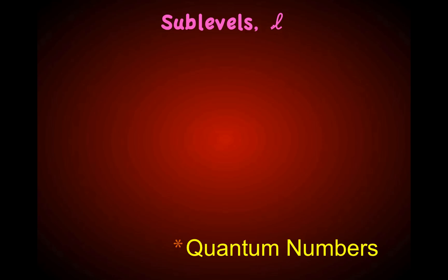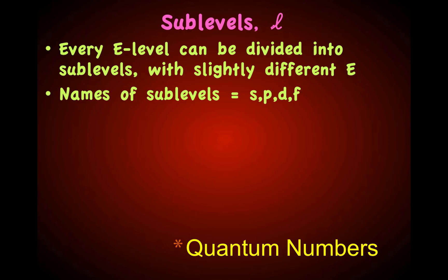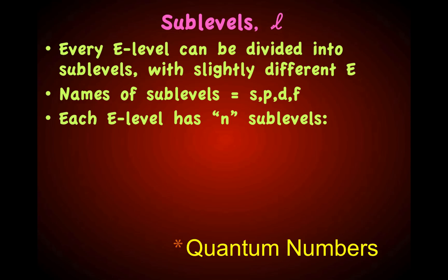The second quantum number describes sublevels. Every energy level can be divided into sublevels with slightly different energies. The names of the sublevels are S, P, D, and F. Each energy level has n sublevels. In the first energy level, n equals 1, there exists one sublevel, named 1S. In the second energy level, n equals 2, there are two sublevels: 2S and 2P.